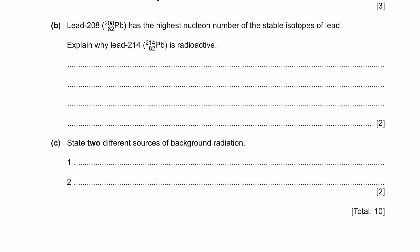Question B. Lead 208 has the highest nuclear number of a stable isotope of lead. Explain why lead is radioactive. Remember, radioactive is due to unstable number of neutrons and protons. In a nucleus of an atom, it contains protons and neutrons. When there are too many numbers of neutrons, the atom becomes unstable, and it will decay to reduce the number of neutrons. This is what radioactive means.